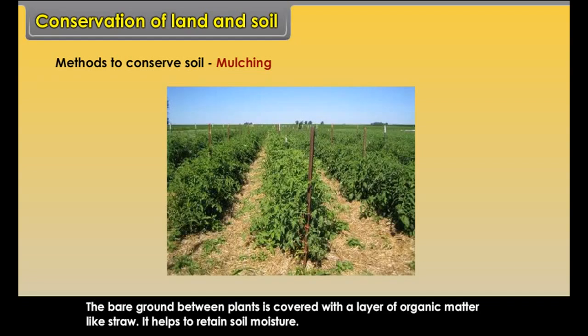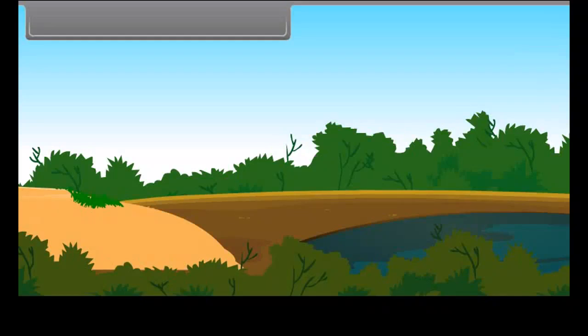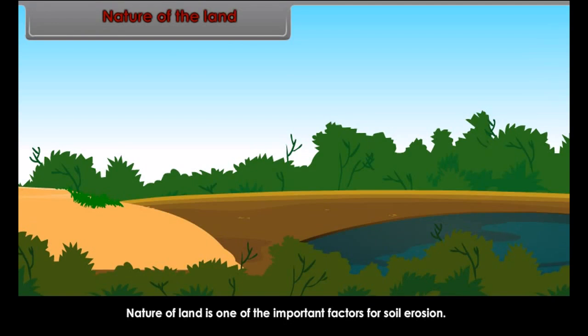It helps to prevent the speed of gullies. The bare ground between plants is covered with a layer of organic matter like straw, which helps to retain soil moisture. Contour Barriers — stones, grass and soil are used to build barriers along contours. Trenches are made in front of the barriers to collect water.